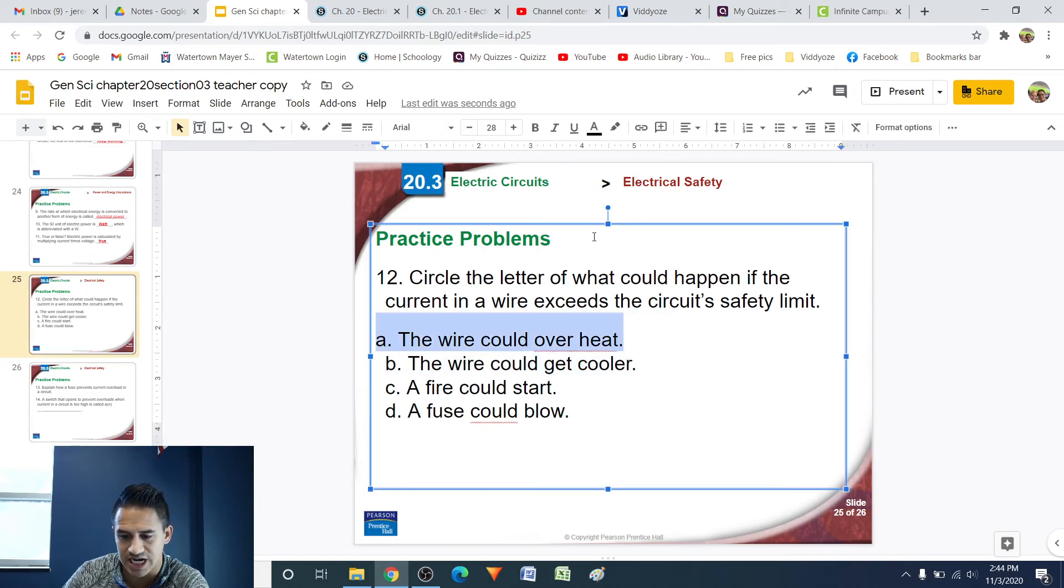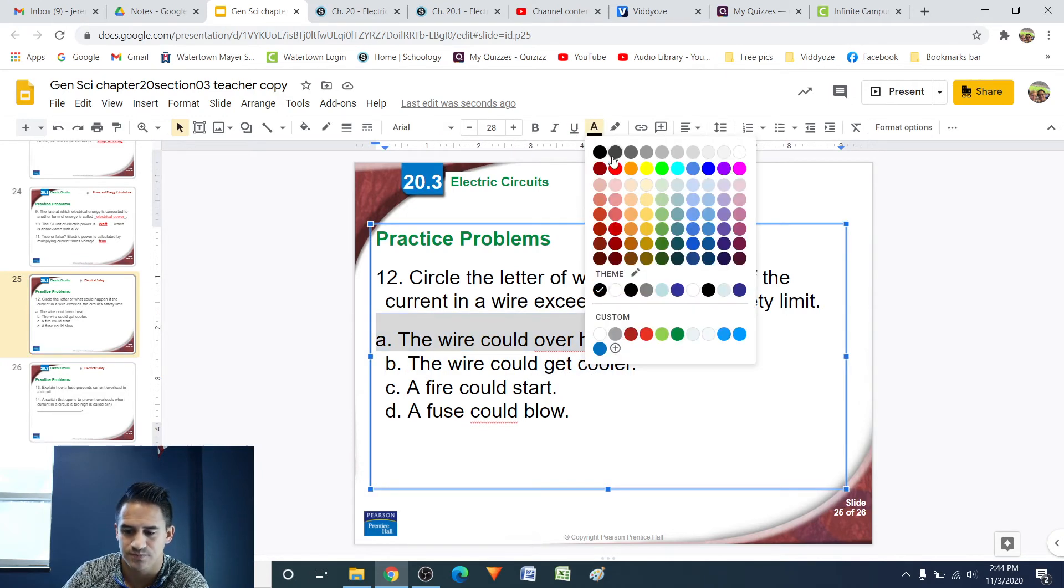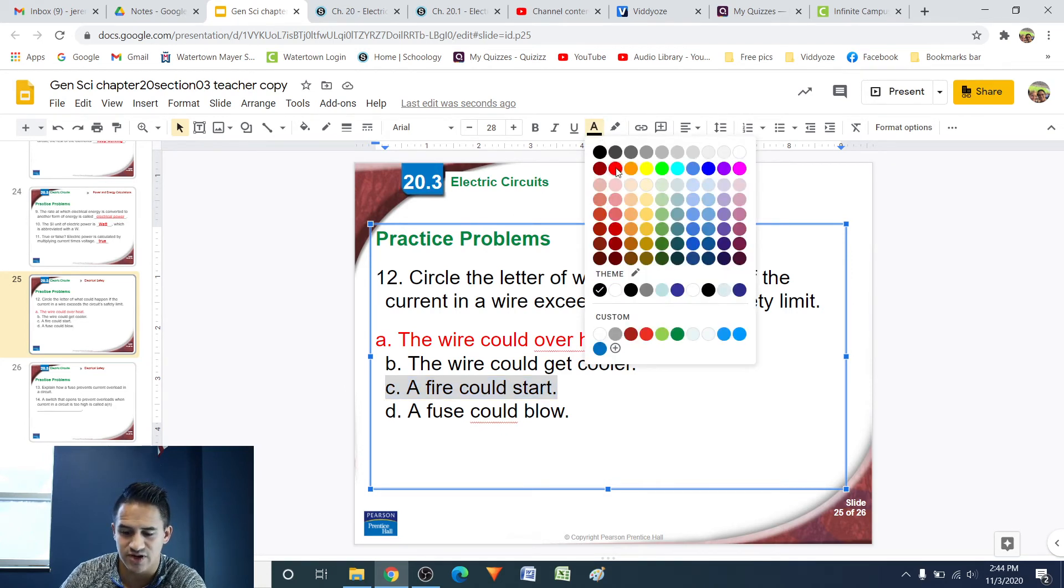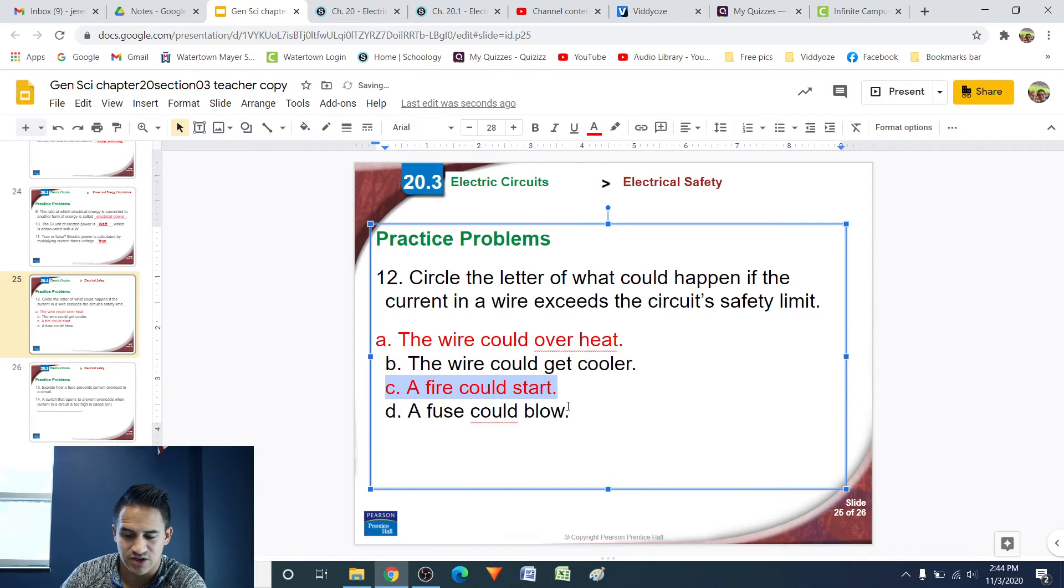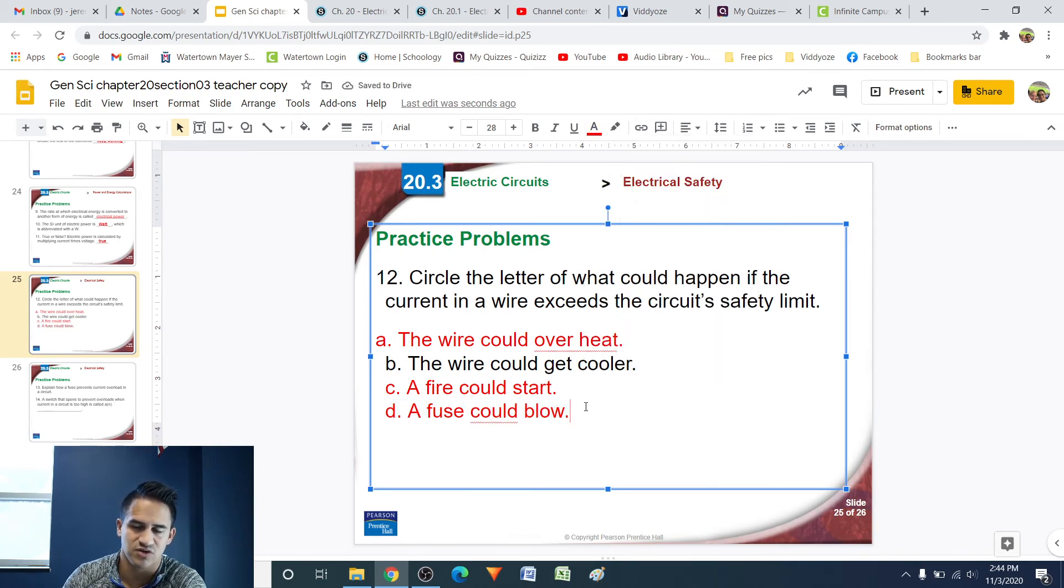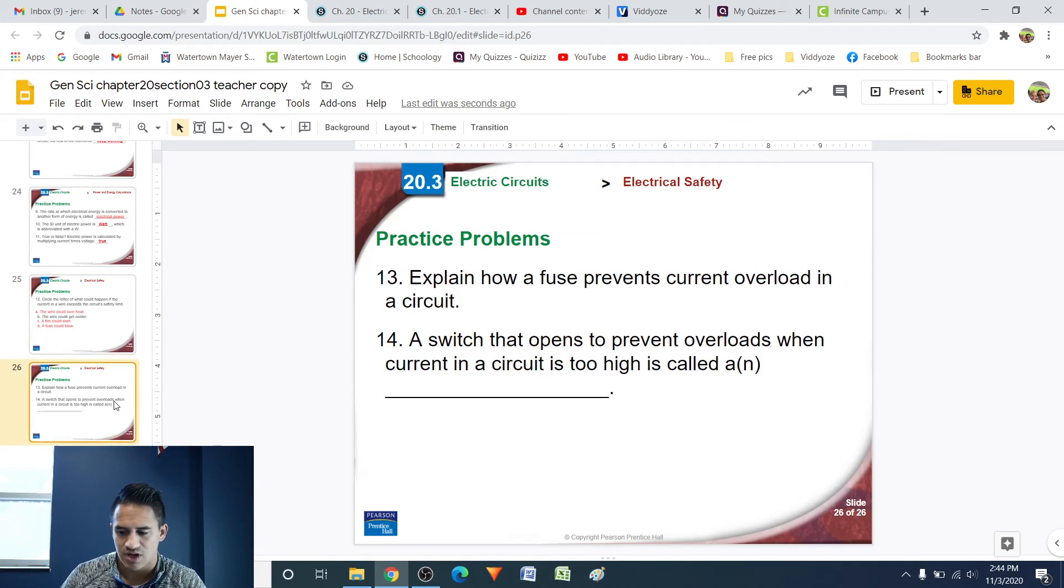So, what could happen if a wire exceeds the circuit's safety limit? The wire could overheat. Yes. It's going to get hot, which again is not good. The wire could get cooler. No. It's going to get hotter. A fire could start. Yes. When things get hot, things start to turn on fire, or they start to melt. Letter D. A fuse could blow. Yes. So, if we have fuses, this is where a fuse would come in, right? Where if it gets hot, it will melt, it will then fall off the circuit or the wires, and then everything will turn off, which is good, because then fire won't start.